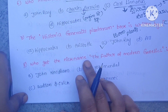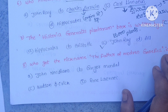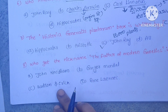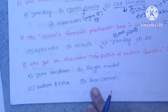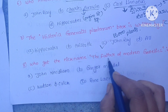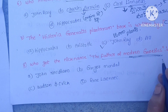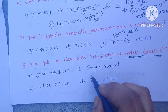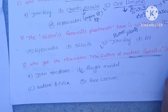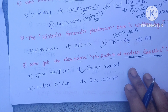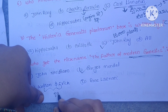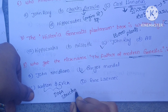The next question is: who got the nickname 'Father of Modern Genetics'? Options: A. John Needham, B. Gregor Mendel, C. Watson and Crick, D. Renee Laennec. Gregor Mendel explained genetics and got the nickname 'Father of Modern Genetics.' Watson and Crick described the DNA structure.